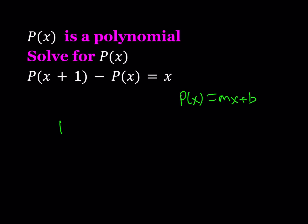Well, in this case, I should be getting P of X plus 1 as MX plus M plus B. And if you subtract these expressions, you're going to notice that everything pretty much cancels out and you end up with the constant M. So it can't be equal to a variable. So obviously this shows that P of X cannot be linear.